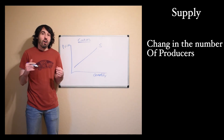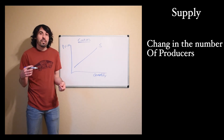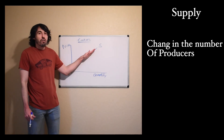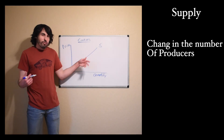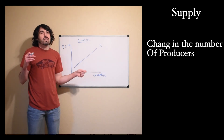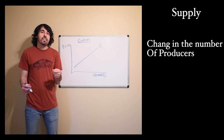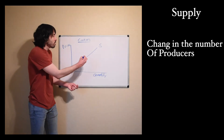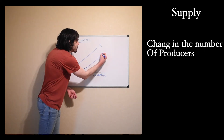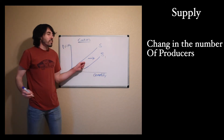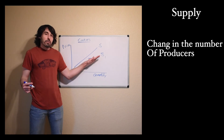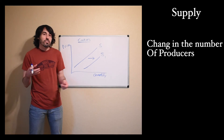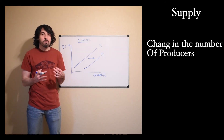A change in the number of producers can also change the supply of a product. If there are more producers, more manufacturers, or more businesses providing a product, the supply would increase. If there are fewer, then supply would decrease. So let's say a new company moves into the area and decides they're also going to be making cookies. If there are more companies producing cookies, then the supply of cookies will increase and shift to the right. At every price, there are more cookies available because there are more manufacturers — a whole new producer in the market making cookies as well.